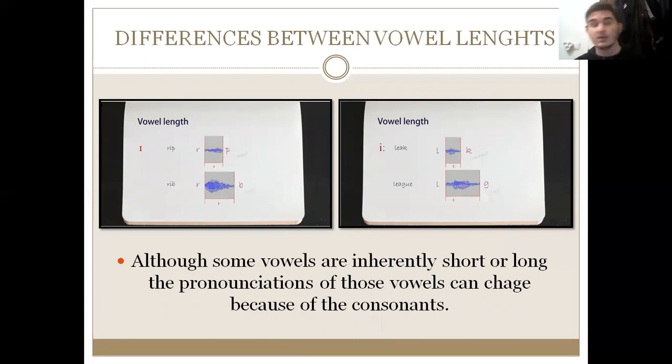But in some cases in this language, although some vowels are inherently short or long, they can be pronounced shorter or longer, depending if they are before a consonant that is voiced or not. If you look at the picture on the left, you could see that the E vowel comes before the P consonant, which is not voiced. So it would sound normally short, you would say rip. But if the E vowel comes before a voiced consonant like B, you would lengthen the vowel, you would say rib. You can hear a little bit of lengthening that goes in there.